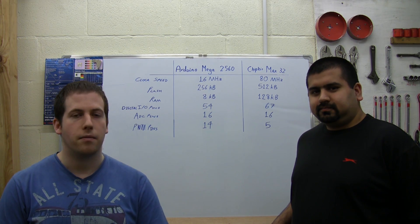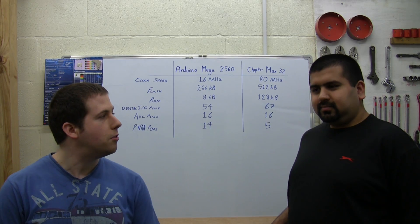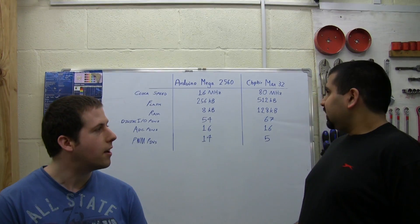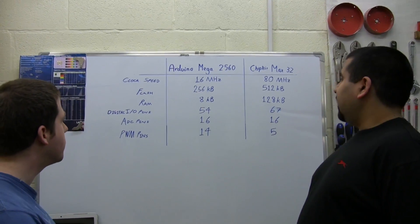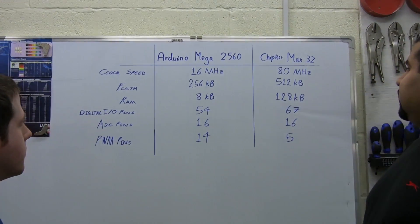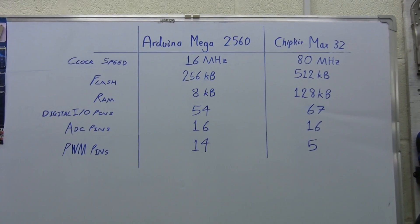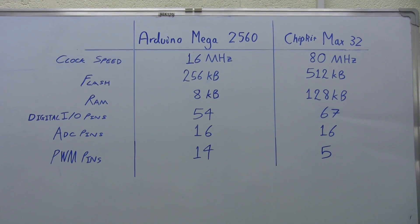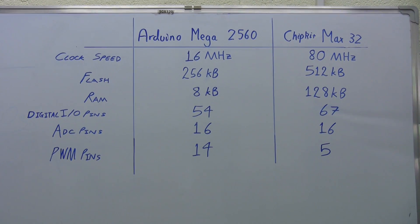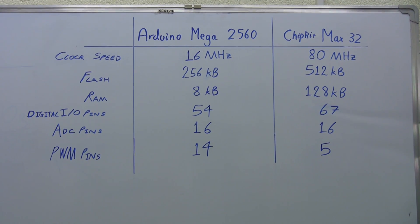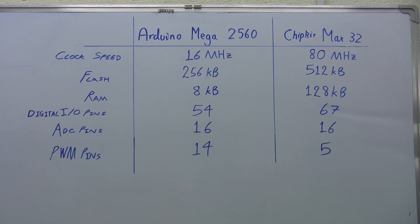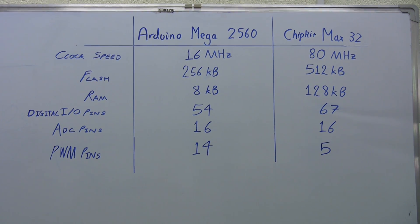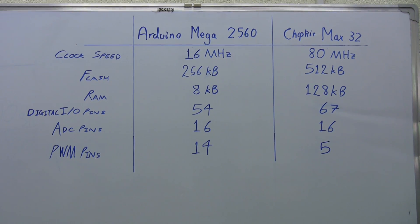Going straight into it - Sajjad, do you want to take us through the specification? So over here we're comparing the Arduino Mega 2560 and the chip kit Max32. We'll start off with the clock speed, which the Arduino runs at 16 MHz and the chip kit runs at 80 MHz.